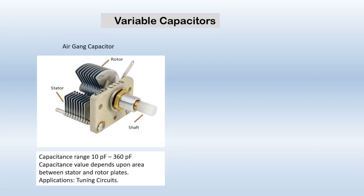In variable capacitors we have the air gang capacitor. As shown in the diagram, it has two types of plates: stator plates and rotor plates, with one shaft. By rotating the shaft you can increase the area between the rotor and stator plates, and as this area increases the capacitance value also increases. Its capacitance ranges from 10 pF to 360 pF, and the capacitance value depends upon the area between the stator and rotor plates. It is used in tuning circuits.